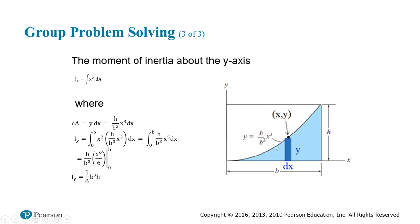Notice that DA is always just Y DX as usual. Substitute Y as a function of X, H divided by B cubed, X cubed. Put it all into your equation here. Combine like terms. You get the constant H over B cubed, which can come out of the integral.